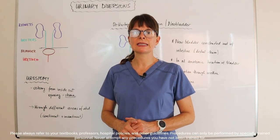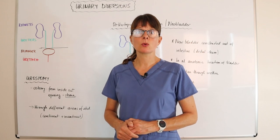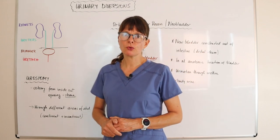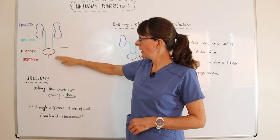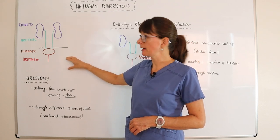Welcome to Nursing School Explained and this video on urinary diversions. Today we're going to be talking about the neobladder. So a quick review here. We have the normal anatomy of the kidneys, ureters, bladder, and urethra to help us filter and eliminate urine.